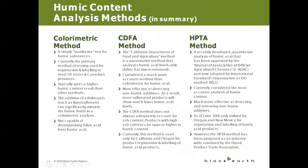I wanted to show you the different methods for testing and why Black Earth holds their products to the highest level of accuracy and standard. The first is the colorimetric method, a simple qualitative test for humics—it measures quality, not quantity. Currently it's the most popular and widely accepted method, used for registration and labeling in most of the US and Canada. Colorimetric analysis is a fast and convenient method: all you need is a color meter, which calculates concentration based on the intensity of light that passes through the solution.